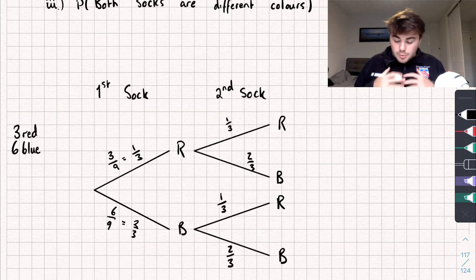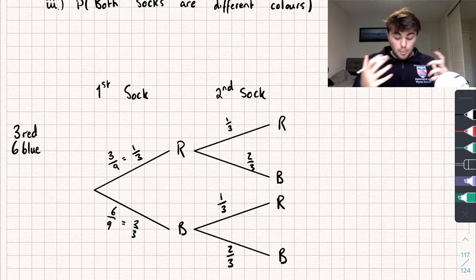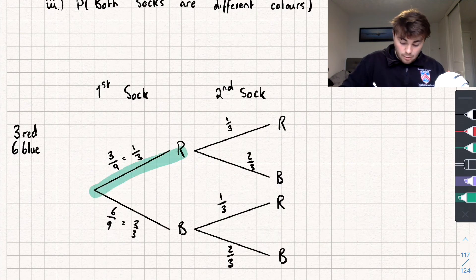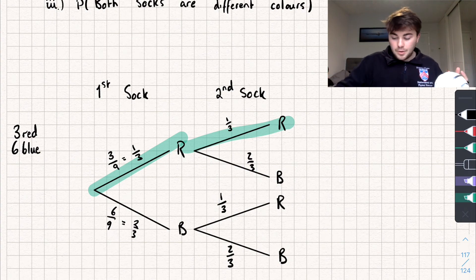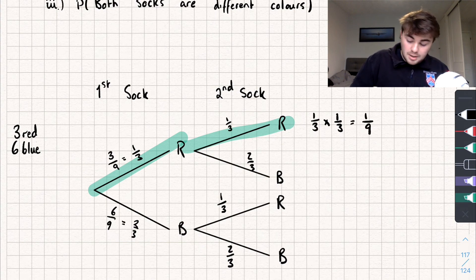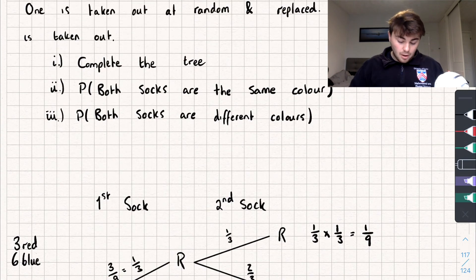So how do we use this tree to calculate probabilities? Say we want the probability of picking two red socks — we'd go along the red branch first and then the red branch again. To find that probability, you just multiply along the branches: one third multiplied by one third gives one ninth. That is the probability of picking two red socks.